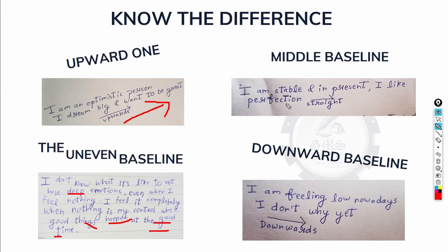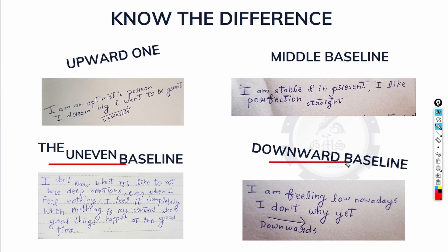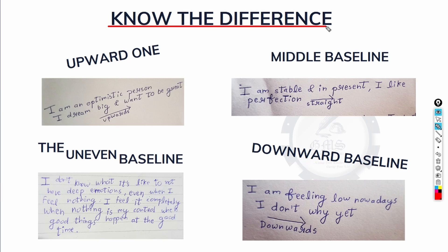To help someone with an uneven baseline, tell them to start writing in an upward baseline on a blank page. If they are using a ruled page, tell them to write as straight as possible — every single word should be straight, not going up or down. This will help them have control over their emotions and much more emotional stability. Upward baseline is preferred on a blank page, as it also helps them be more optimistic. Overall, the downward and uneven baselines are not good traits, while the upward and middle ones are good. I believe the concept of baselines is now clear. This is Akhilesh Bhagavad from Graphology Made Simple — let's keep learning and keep growing.